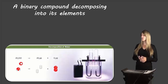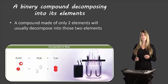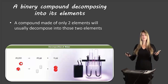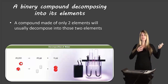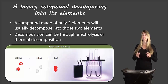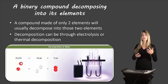First, a binary compound that decomposes into its elements. If the compound has two elements — there could be several atoms of those elements, but just two elements — it will usually break down to separate those two elements from each other. Decomposition can occur through electrolysis, which is applying an electric current, or thermal decomposition, which is applying heat. The picture shows electrolysis breaking down water into its component elements, oxygen and hydrogen.